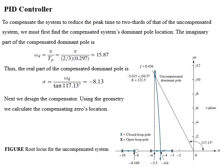The third pole exists at minus 8.169. Looking at the figure, which represents the root locus for the uncompensated system operating at a damping ratio of 0.456 or 20% overshoot, the gain is equal to 121.5 and the third pole lies at minus 8.169. Now we must compensate the system to reduce its peak time to two-thirds of the uncompensated system. For this, we must find the uncompensated system's dominant pole location using the relation of peak time.